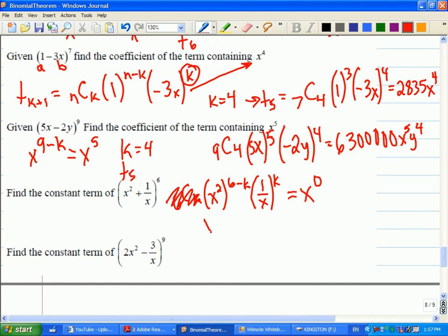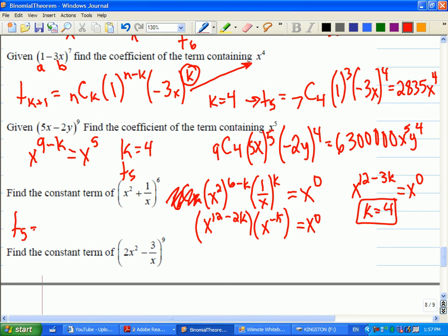So this is going to become x to the twelve minus two k. And when I do the exponent laws on this, it's going to be x to the negative k. So what I end up with is x to the twelve minus three k equals x to the zero. So that tells me that k must equal four, and I'm looking for term number five in this example.